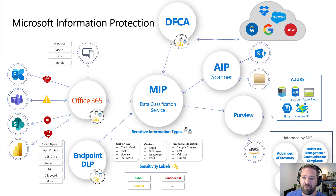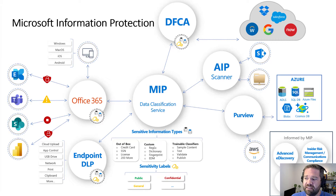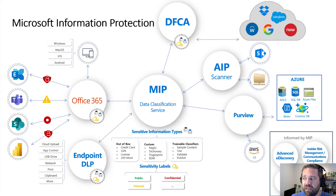I really like this slide from Microsoft because it puts into perspective both the architecture of how Microsoft has designed all of their information protection technology, as well as the importance of where sensitive information types fit in and why it's so important to have this key component working well. The core of everything is the MIP stack — the classification service that Microsoft has — and that's going to trigger all of our other protection technology.